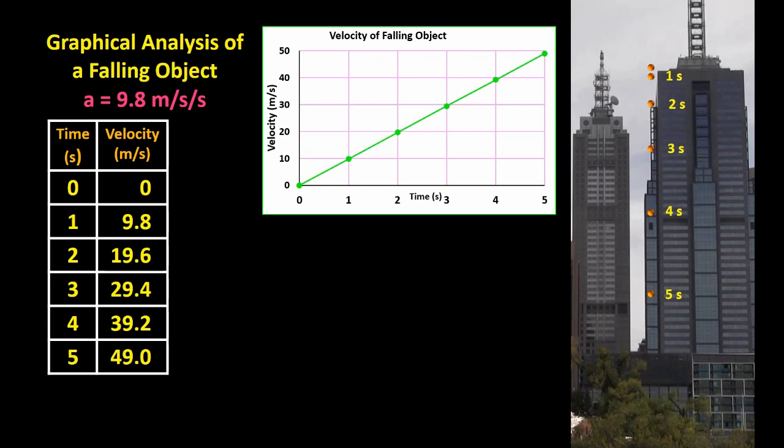Drawing up a velocity versus time graph is fairly easy. There's the first dot, there's the second, and so on. The velocity increases at a constant rate.